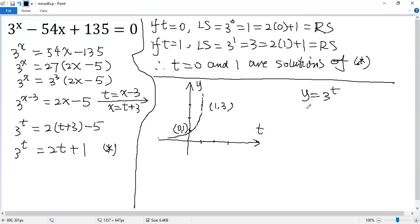And look at the right side function. Y equals 2t plus 1. It is a straight line. This straight line passes through these two points. So we draw a straight line passing through these two points.